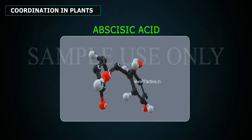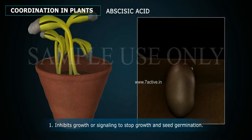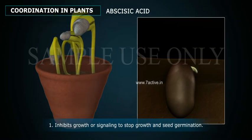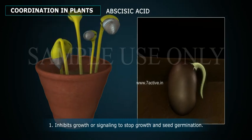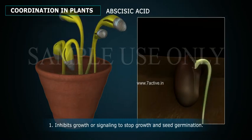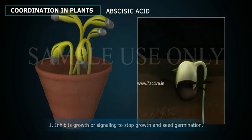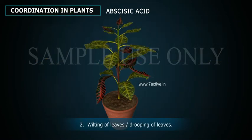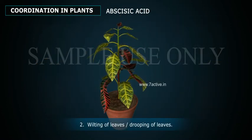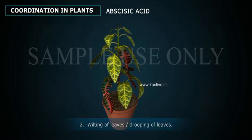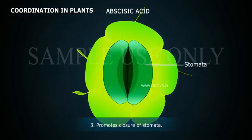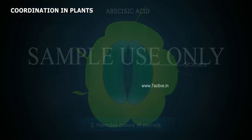Abscisic acid: 1. Abscisic acid inhibits growth, signaling to stop growth and seed germination. 2. It causes wilting and drooping of leaves. 3. It promotes the closure of stomata.